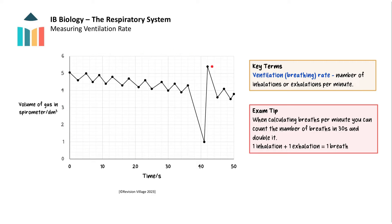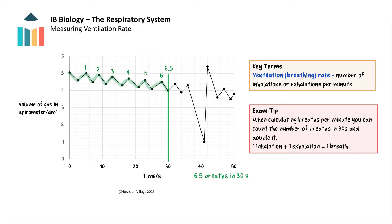You can also use spirometer traces to measure the ventilation rate, which is the number of breaths a person takes in one minute. To work this out, look for a steady rate on the trace. For example, counting breaths over 30 seconds and doubling the result gives breaths per minute. Counting from zero to 30 seconds in this example gives six and a half breaths, which when doubled gives a ventilation rate of 13 breaths per minute.